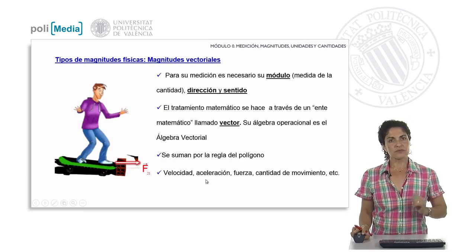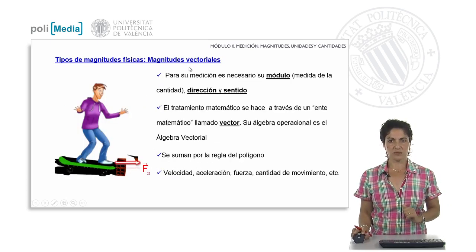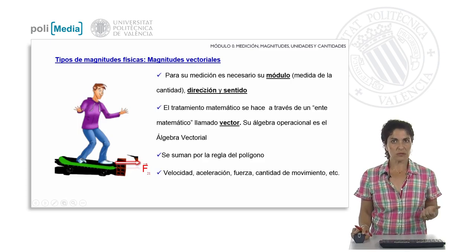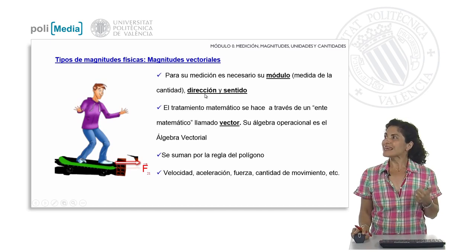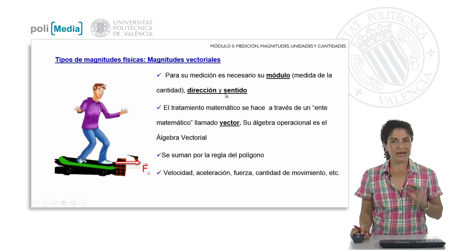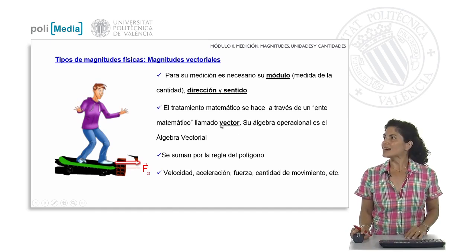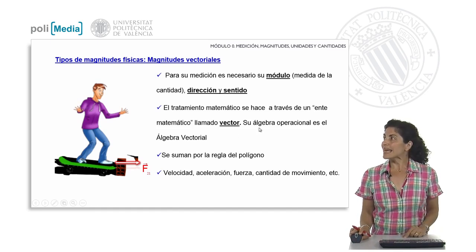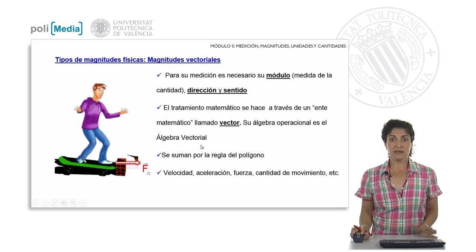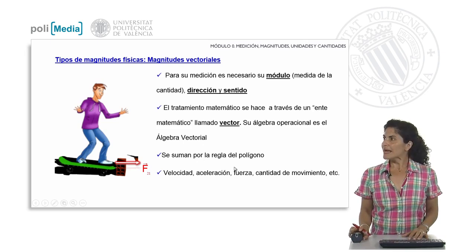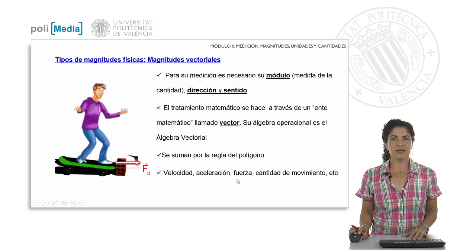In the other group, we have vector quantities. In this case, in order for them to be perfectly determined, we need, in addition to the numerical value, a modulus, a direction, and a sense. Therefore, the perfect mathematical entity to represent these physical quantities is the vector. To work with them, we use vector algebra, and they are added according to the polygon rule. Examples of these vector quantities are velocity, acceleration, force, and so on.